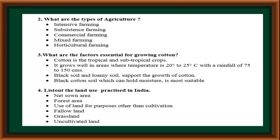What are the factors essential for growing cotton? Cotton is a tropical and subtropical crop. It grows well in areas where the temperature is 20 to 25 degrees Celsius with a rainfall of 75 to 150 cm. Black soil and loamy soil support the growth of cotton. Black cotton soil, which can hold moisture, is most suitable.